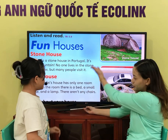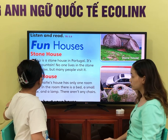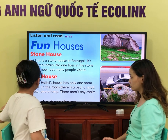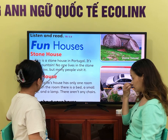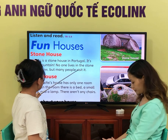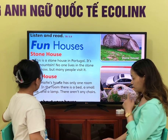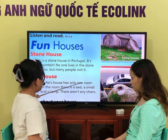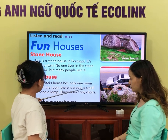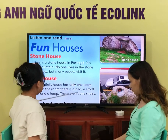Now let's have a reading. Please read this one. Fun house. Stone house. This is a stone house in Portugal. It's on a mountain. No one lives in the stone house now. This is an egg house. It has only one room inside. In the room, there is a bed, a small table, and a lamp. There are no chairs.